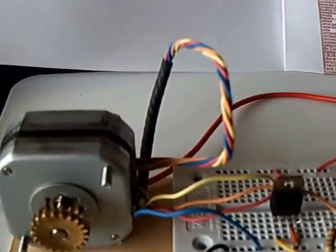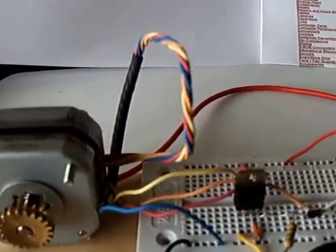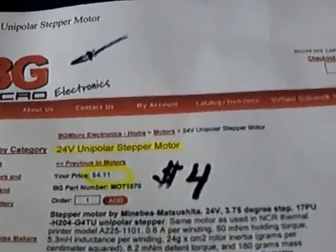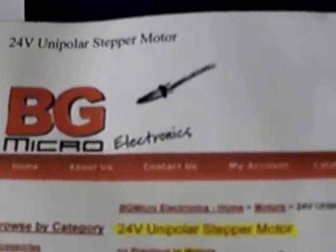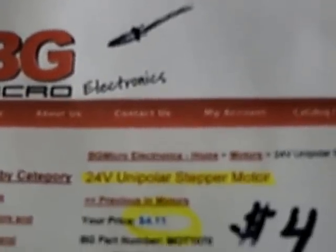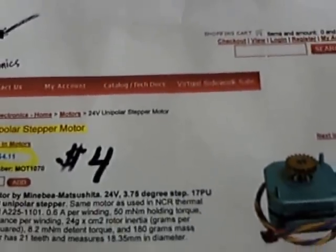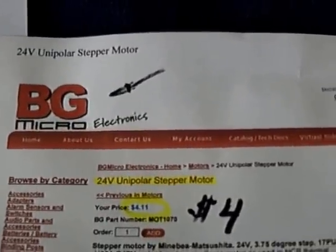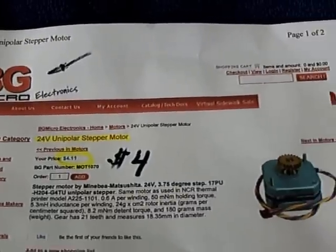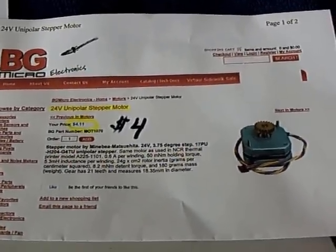But the stepper motor, I have not worked with them before. I'm ignorant as far as these stepper motors are concerned, but I did find one very inexpensive at bgmicroelectronics.com. It's $4, and it's called a 24-volt unipolar pulse motor. You can also get it out of an old copy machine.